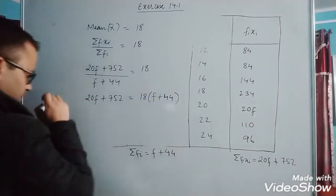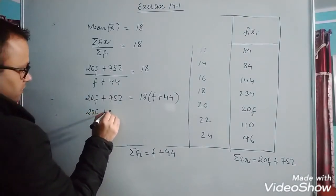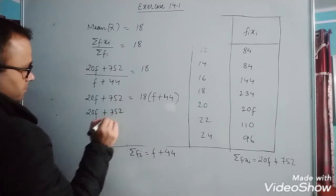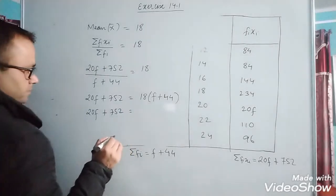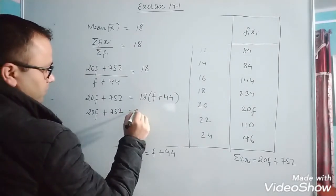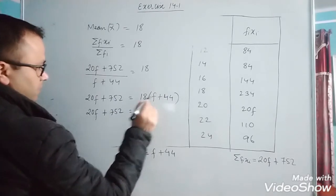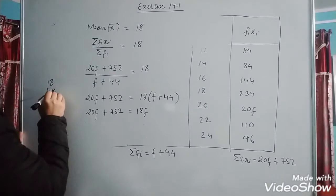20f plus 752 equals to 18 into f plus 18 into 44. 18 into 44 is 792.